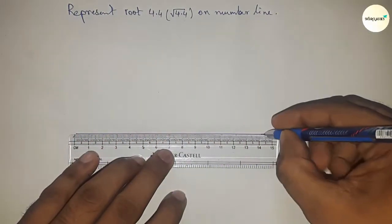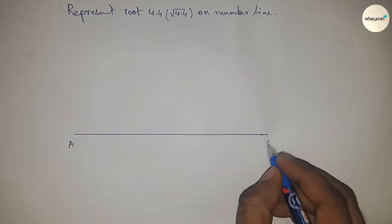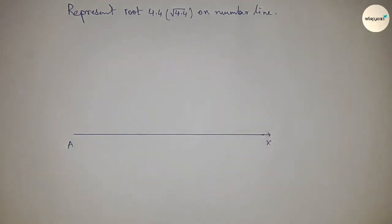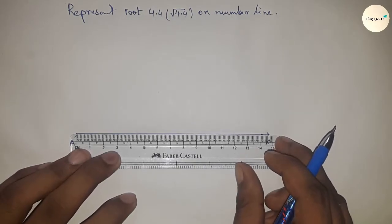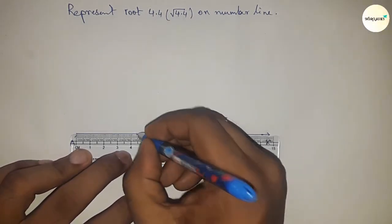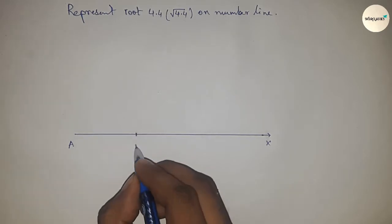First of all, drawing a line of any length and this is AX line. Next, taking a distance 4.4 centimeter by using scale. So this is 4.4, so AB equal to 4.4 centimeter.